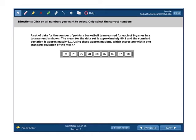Click on all the numbers you want to select. Only select the correct numbers. Again, if they say click on all the numbers, we get to assume that there should probably be more than one answer here. I can't guarantee you that it's going to be more than one, but it's telling you here that it's probably more than one, but probably not all. A set of data for the number of points a basketball team earned for each of 9 games in a tournament is shown. The mean for the data set is approximately 80.1. And the standard deviation is approximately 6.1.